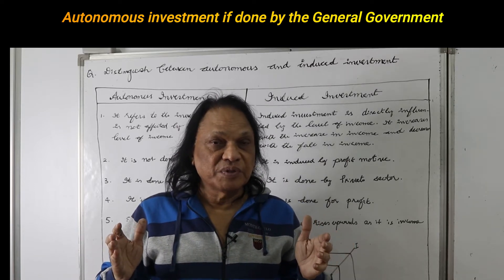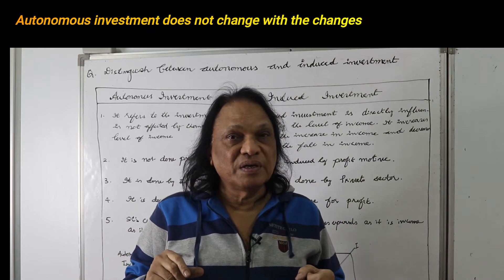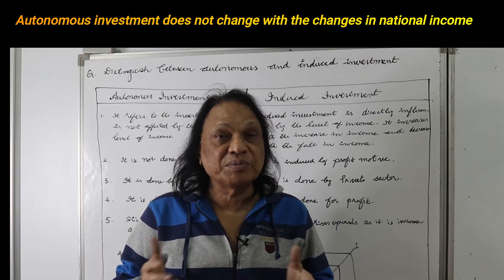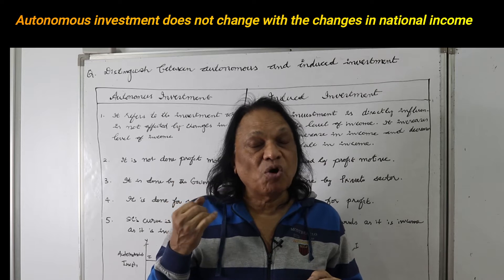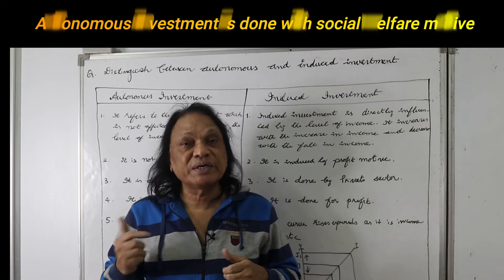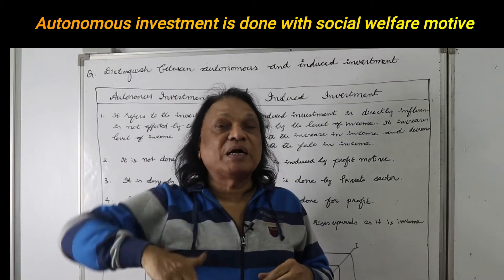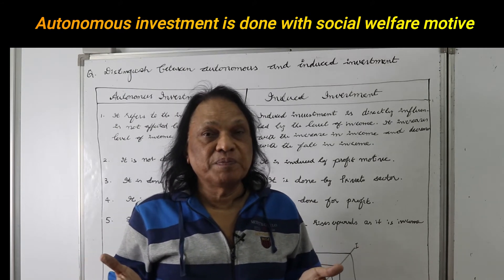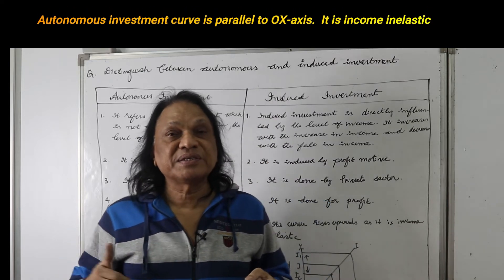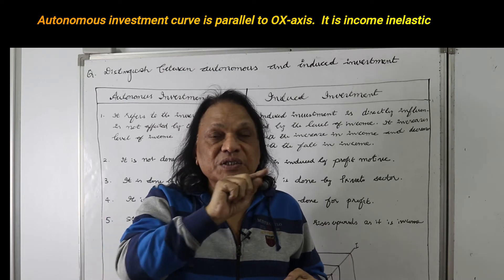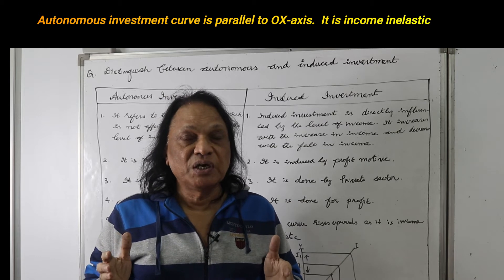The government does this not with any profit motive — that is autonomous investment. It does not change with national income. Whether national income is increasing or coming down, autonomous investment remains the same. That is why the autonomous investment curve is parallel to the x-axis, and we call it income inelastic.